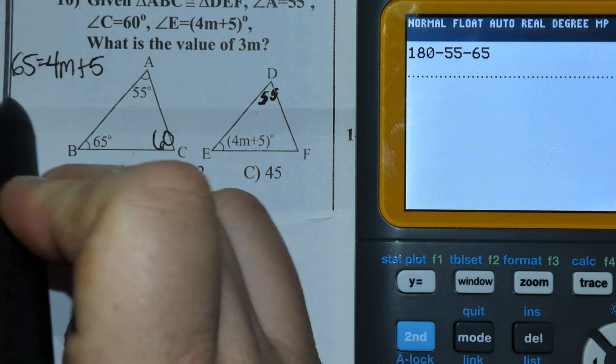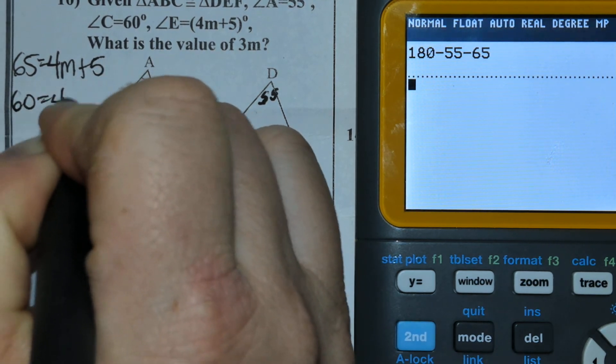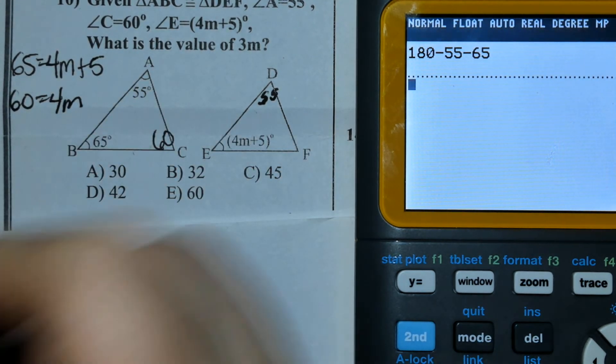In solving this, I'm going to start by subtracting 5 to the opposite side. Now dividing by 4 on both sides.